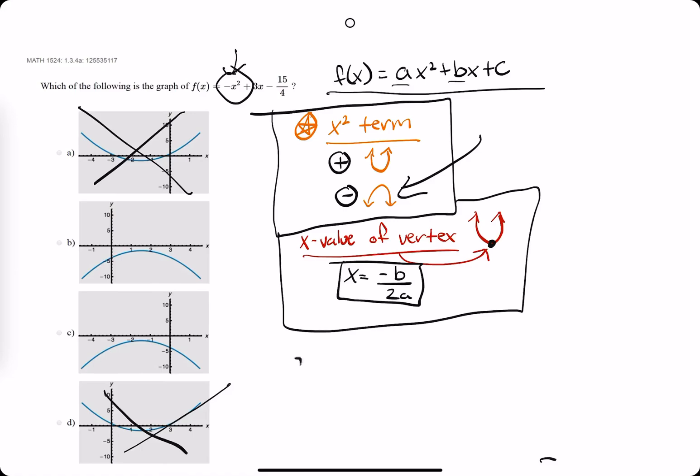So in this case, our a value is negative 1 because there's a negative x squared, which means there's basically a negative 1 in front of the x squared term. And then our b value is positive 3.